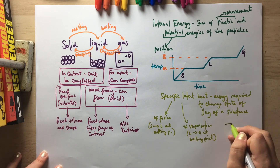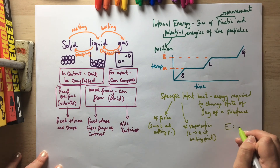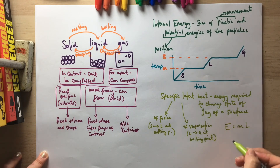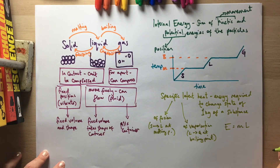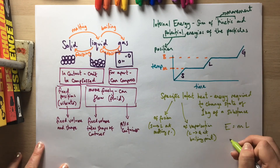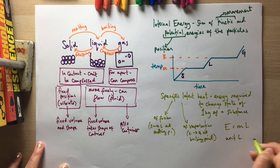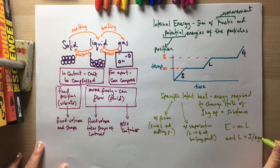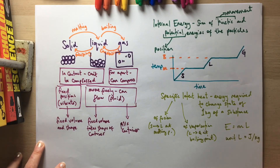You are given this equation in your equation sheet: Energy equals mass times specific latent heat. The unit for specific latent heat is joules per kilogram, because it's the energy required to change the state per unit mass.